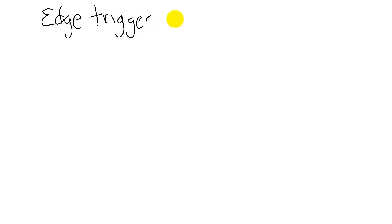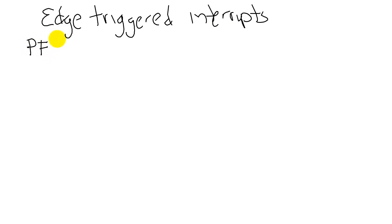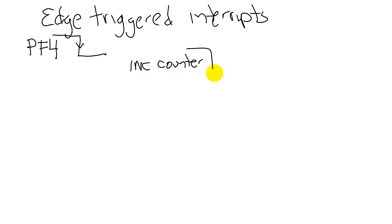I'm John Valvano. In this video, we will use edge-triggered interrupts to solve a real-time problem. The problem we're going to solve is we're going to have a switch attached to PF4. When we touch the switch, there will be a falling edge on PF4. The action I wish to perform is to increment a counter — this is a software action — and so the interrupt is going to trigger a software action.